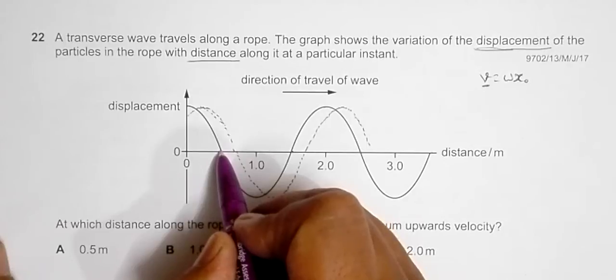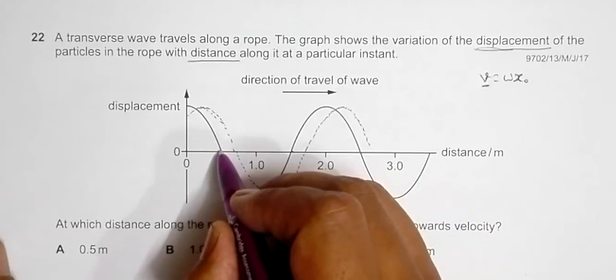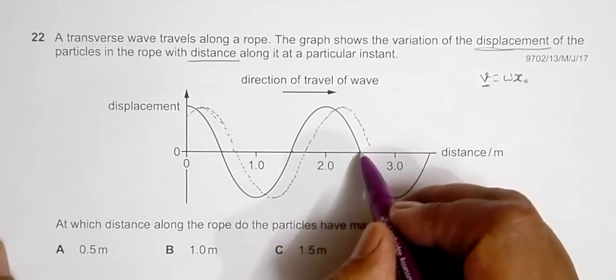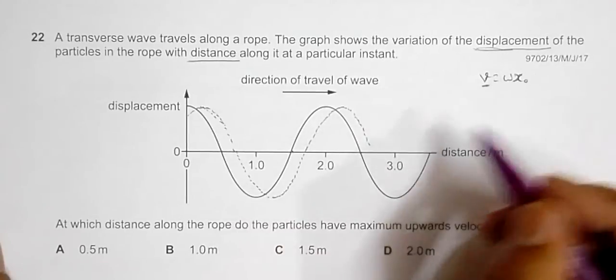So it's traveling with a high velocity downward, it travels with the high velocity upward. Similarly, this particle will also be traveling with a high velocity upward.